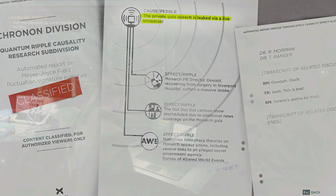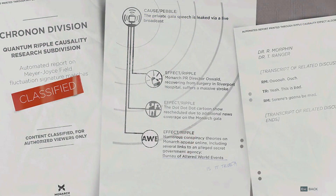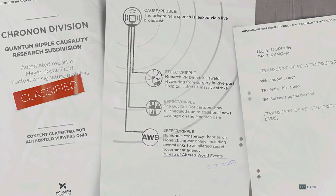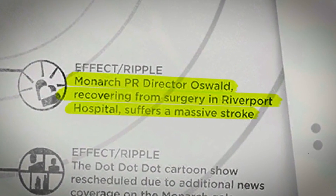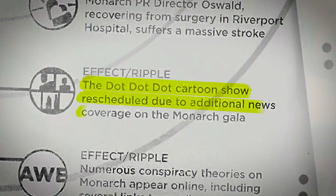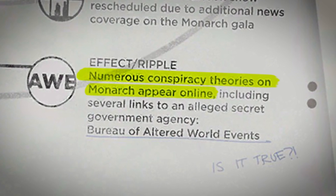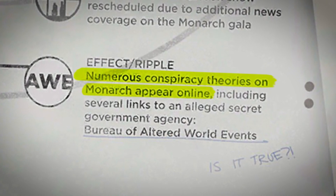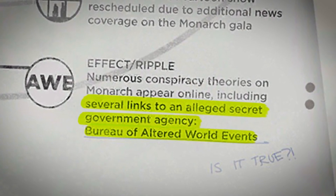Ripple 5: Gala Speech. Nature of pebble: Jack releases the live feed of the Monarch Gala Speech online. The director of Monarch had been recovering from surgery at the hospital; after hearing of the leak, the stress caused a massive stroke. Because of the hype surrounding this leak, a cartoon was cancelled so the news could cover it. Most importantly, as a result of this video being leaked, multiple conspiracy theories began to appear online about Monarch — some including potential links between the company and a secret government agency called the Bureau of Altered World Events.